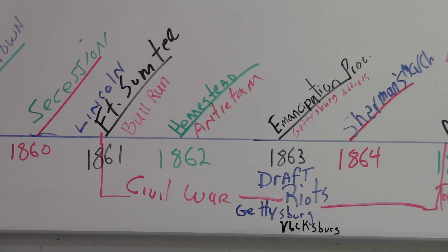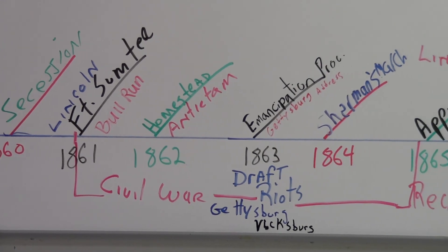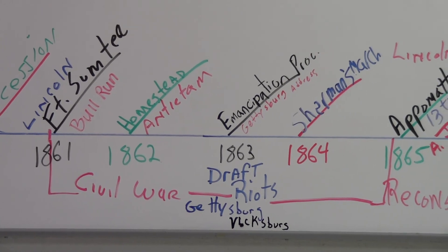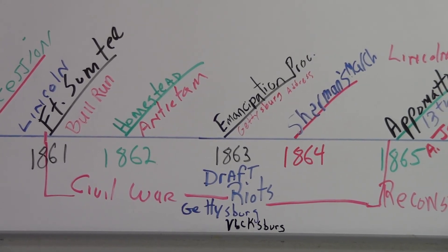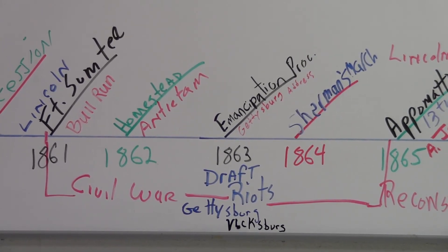The South has a superior general in Robert E. Lee. The North has yet to find a good general, and as a result, the South will have a lot of early victories. In 1862, remember the Civil War is 1861 to 1865, you can see it bracketed on the timeline.